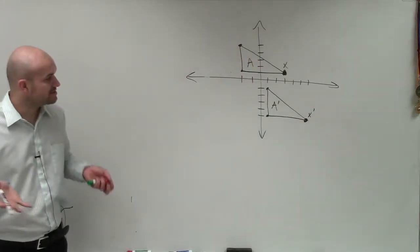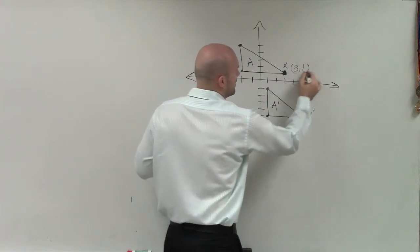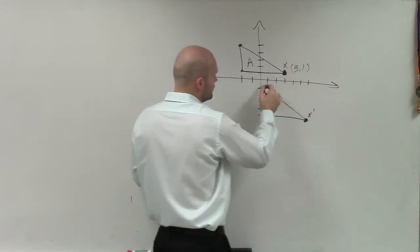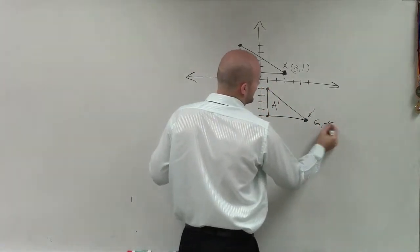So there's a couple ways we can do this. One, we can determine what the point is, which this one is 3 comma 1. And then our new point is 1, 2, 3, 4, 5, 6. And then 6 down to 1, 2, 3, 4, 5. So this is 6 comma negative 5.